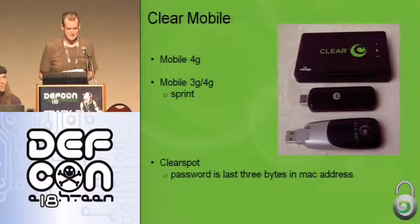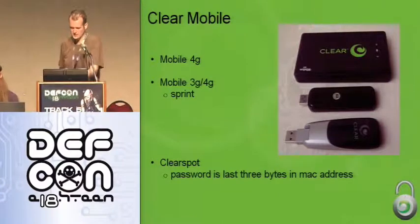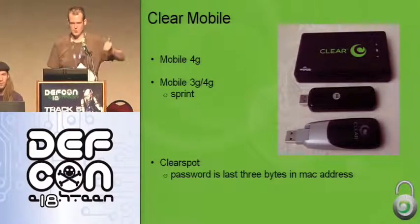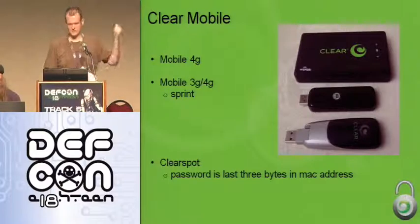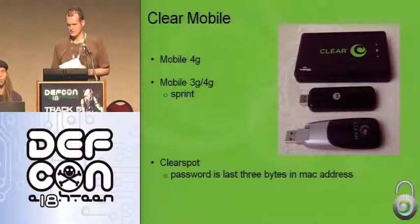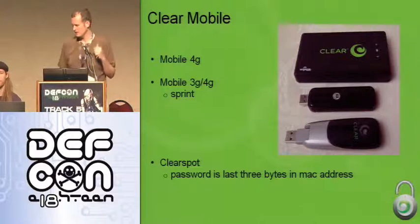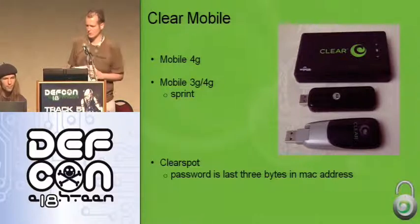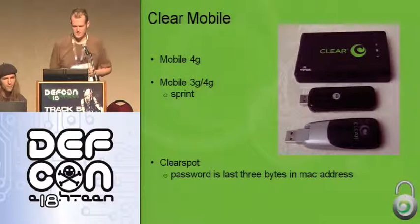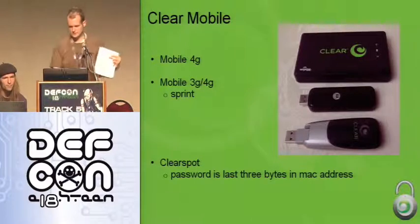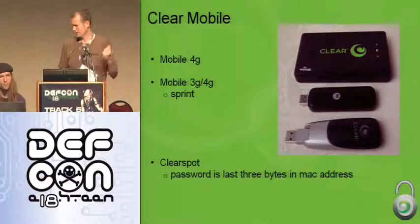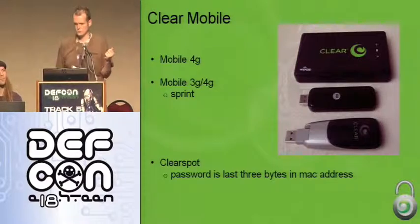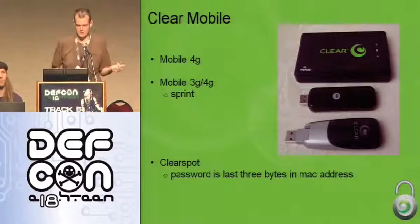These are some of the Clear mobile devices. The one in the middle is the basic mobile USB stick — it's been out for a while. You plug it into your laptop and get a 4G connection. It works in Windows and OS X now, with some people working on Linux support, though it's still a bit sketchy. The second device is the 3G/4G USB stick, which will downgrade to 3G if you're in an area without 4G coverage, which is nice.